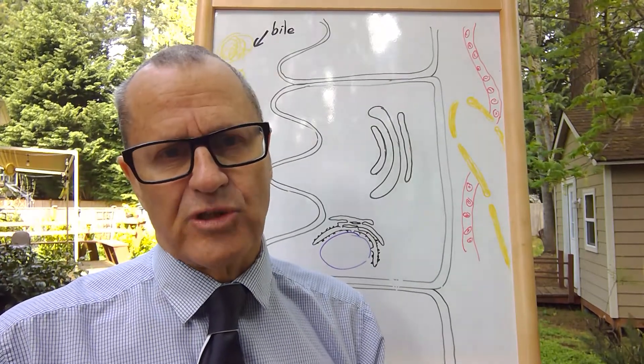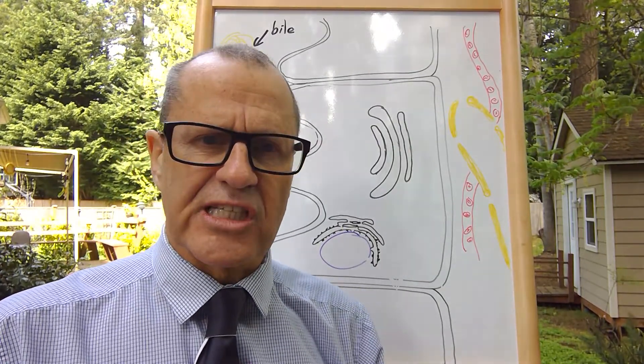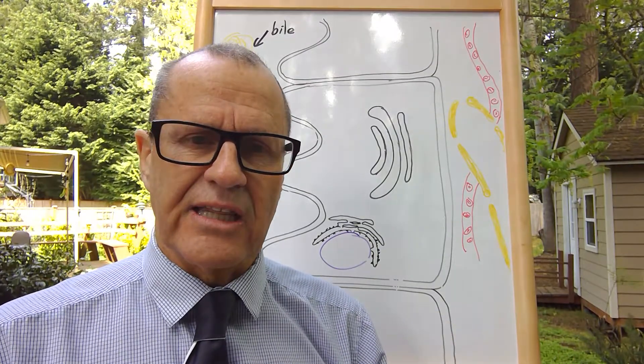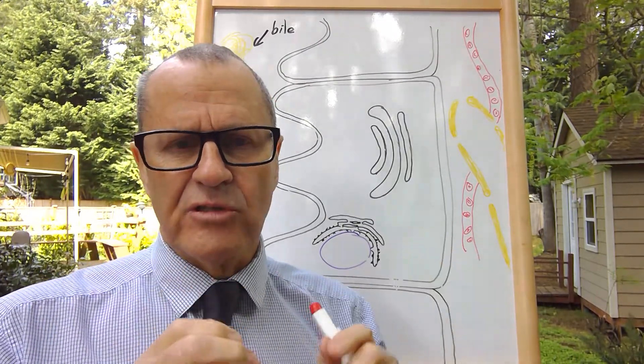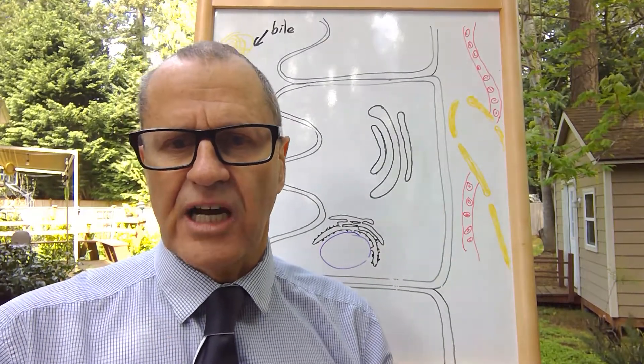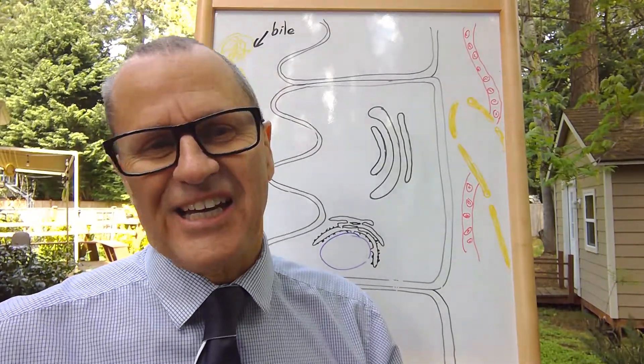Emulsify just means break up large droplets into small droplets. So an emulsion, such as emulsion paint or milk or something like that, is simply small droplets of fat in a hydrophilic substance.